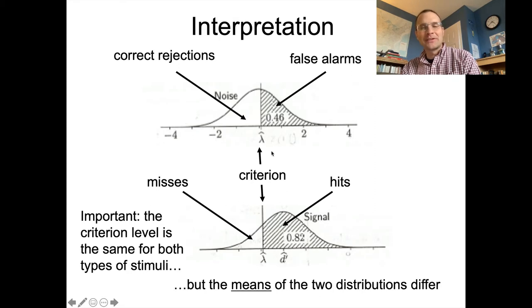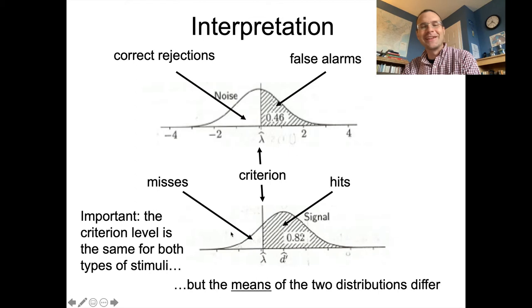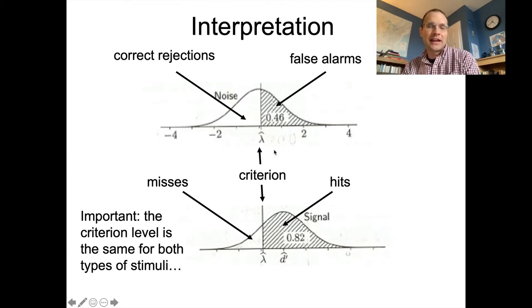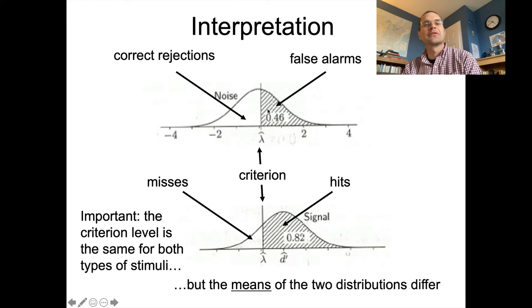That depends on what's out there in the stimulus itself. On top of that, you sort of overlay this criterion — this line in the sand that you draw on the perceptual evidence dimension. You say anytime I hear more evidence than that, I will respond 'present.' If you hear less evidence than that, you say there's nothing there. One odd thing is that sometimes with random noise, you will get more perceptual evidence than is required by the criterion — that's how you get false alarms, cases where you think there's something out there even though there isn't.